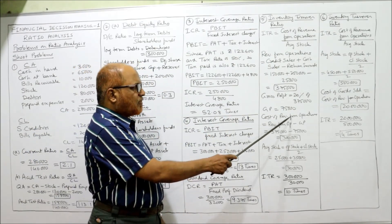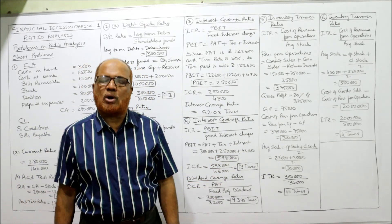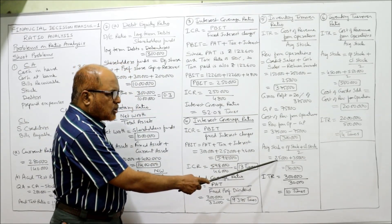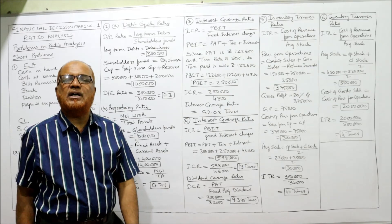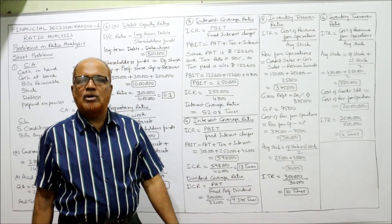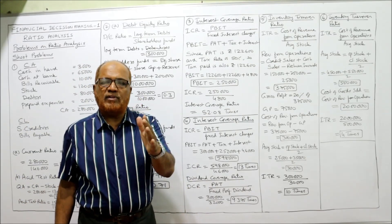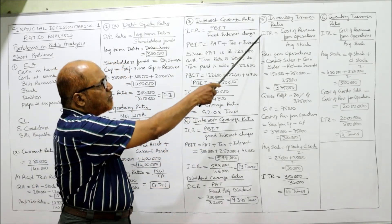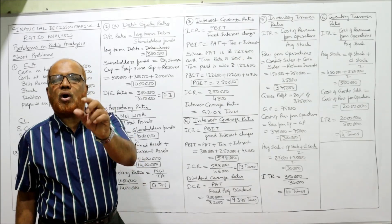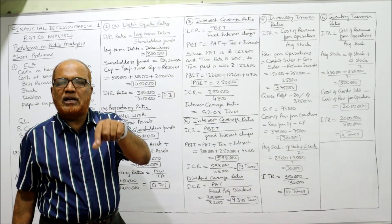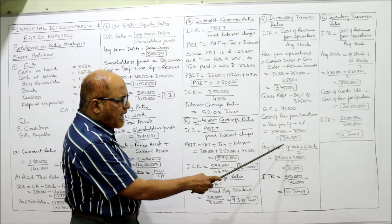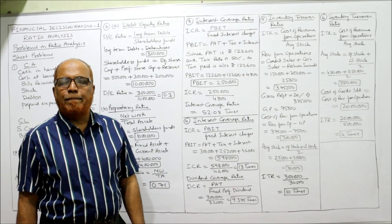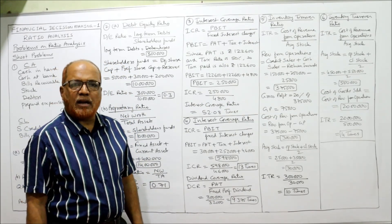Average stock equals opening stock plus closing stock divided by 2: 25,000 plus 35,000 divided by 2 equals 30,000. Now substitute in the formula: inventory turnover ratio equals cost of revenue from operations 3,00,000 divided by average stock 30,000 equals 10 times. Fifth problem is complete.